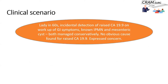I'm going to start off with a clinical scenario to highlight how I formulate questions, search the literature, and find answers for my own understanding and hopefully for the patient's benefit. There's a lady in her 60s who was incidentally detected to have raised CA-19-9 during workup of her GI symptoms. It wasn't very clear why the CA-19-9 was done in the first place, and that is an important lesson for us as practicing clinicians.